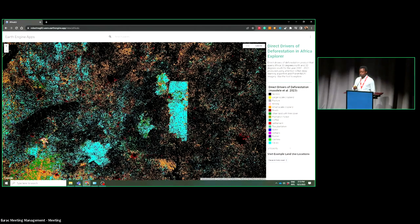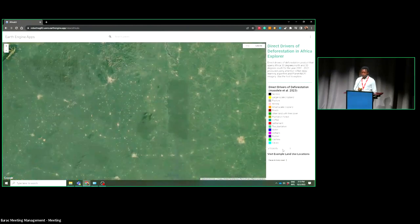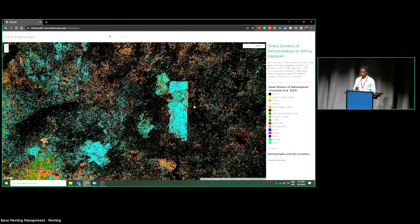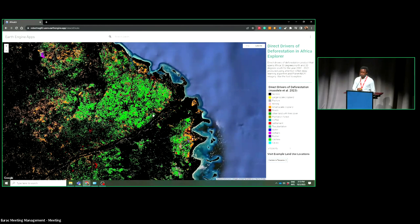Also in Côte d'Ivoire, for example, this is one of the forests called Haut-Sassandra Forest. They were deforested because of cocoa establishment. It was a protected forest, but now it has been converted to cocoa.